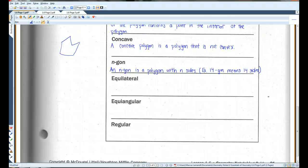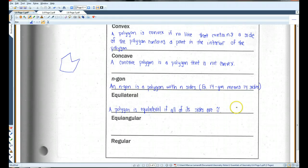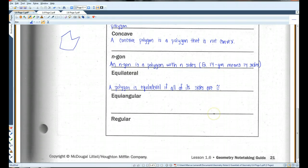Equilateral. If a polygon is equilateral, that means all the sides are congruent. All the sides have the same measure. Remember, this little symbol means congruent. A polygon is equiangular if all of the angles are congruent.